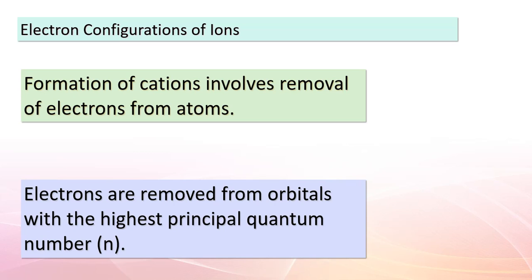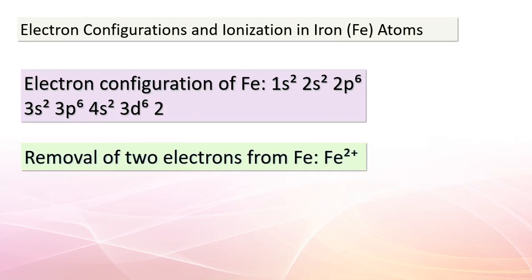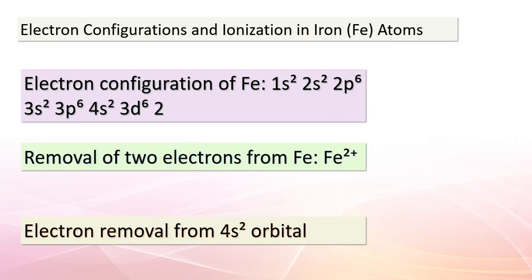This concept of electron configuration is vital to understanding the behavior of ions. The electron configuration of Fe is 1s²2s²2p⁶3s²3p⁶4s²3d⁶. When we remove 2 electrons from Fe, we get Fe²⁺. The electrons removed in this process come from the 4s orbital. Electron configurations play a crucial role in determining an atom's properties and reactivity.